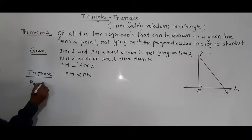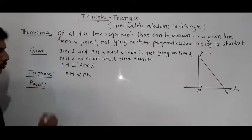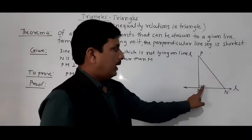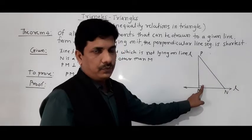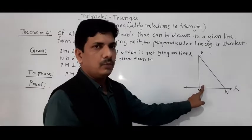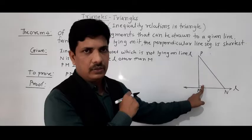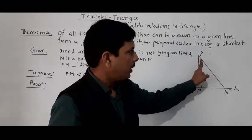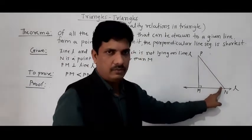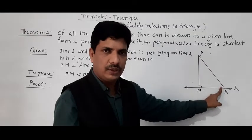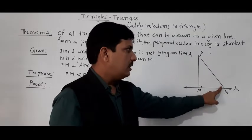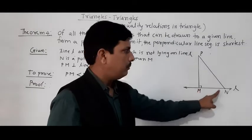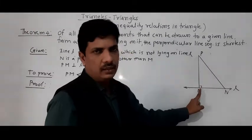Now the proof — very simple. Angle PMN is 90 degrees. According to the angle sum property, the sum of three angles will be 180 degrees. So definitely, angle P plus angle N equals 90 degrees. Therefore angle N is smaller than angle M.